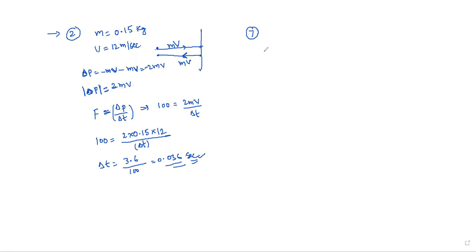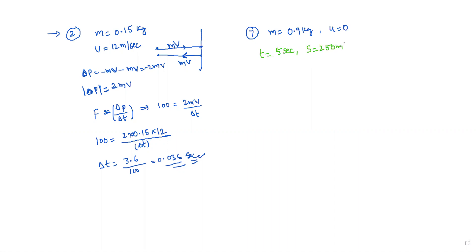A force is applied on a body of mass m equals 0.9 kg that is at rest, so initial velocity u equals 0. The force is applied for a duration of t equals 5 seconds. As a result, the body covers a distance s equals 250 meters. Find the magnitude of the force.